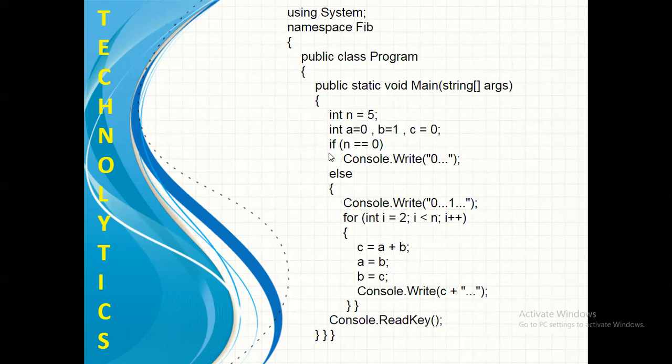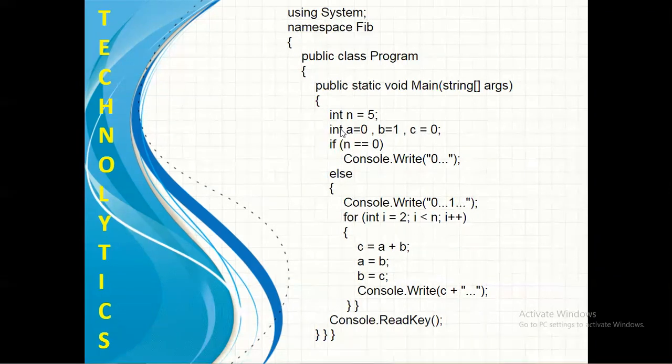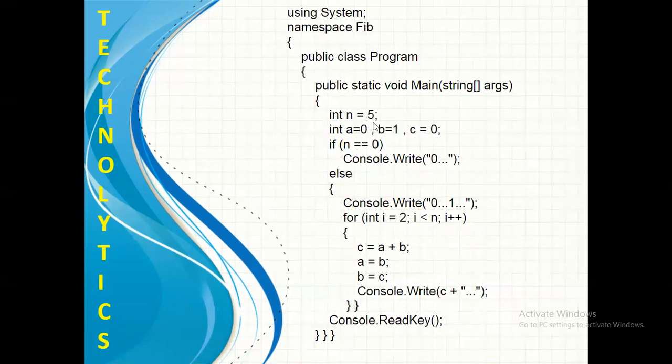Next, we are checking whether n is equal to 0. Since we have already mentioned the value of n is 5 over here, obviously, this situation will never occur. But, in case, if we are accepting this n from the user, we need to check whether user has entered n as 0. Then, in that case, we have to display the output as 0. If this condition is not satisfying, else...